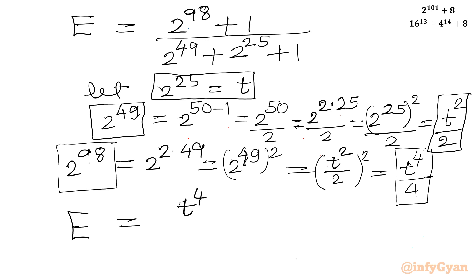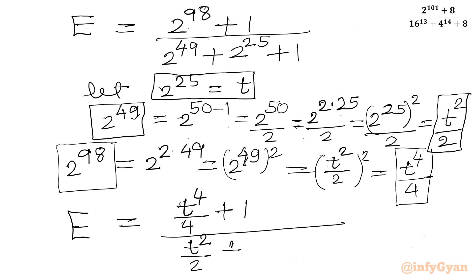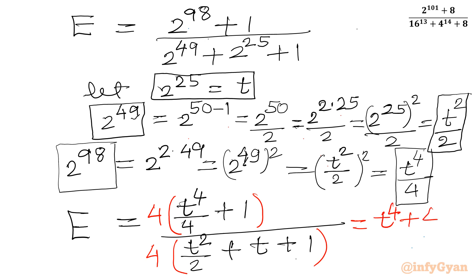Substituting: in place of 2 power 98 we write t power 4 over 4, in place of 2 power 49 we write t squared over 2, and 2 power 25 is t. So E equals (t power 4 over 4 plus 1) divided by (t squared over 2 plus t plus 1). Now I multiply numerator and denominator by 4, giving t power 4 plus 4, divided by 2t squared plus 4t plus 4.